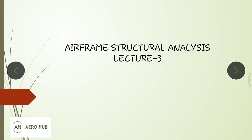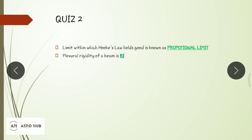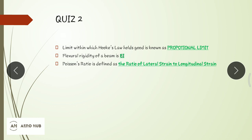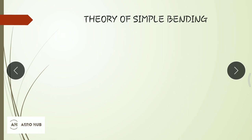Welcome to Lecture 3 of Airframe Structural Analysis. In the last lecture I asked some questions — here are the answers: the limit within which Hooke's law is valid is the proportional limit. Structural rigidity is the product of Young's modulus E and area moment of inertia I. Poisson's ratio is the ratio of lateral strain to longitudinal strain. Stress due to suddenly applied load is two times that of a gradually applied load.